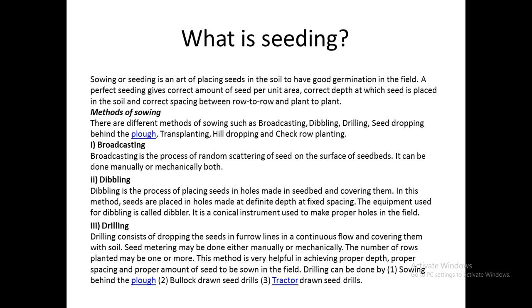Seeding gives the correct amount of seed per unit area at the correct depth, and the spacing between two rows and between two hills can be maintained. There are different methods of sowing such as broadcasting, dribbling, drilling, seed dropping behind the plough, and transplanting.